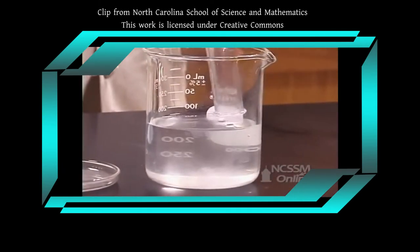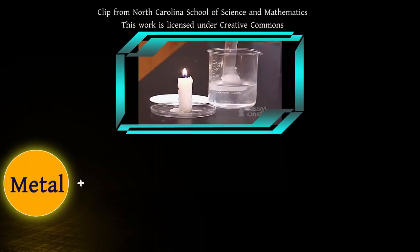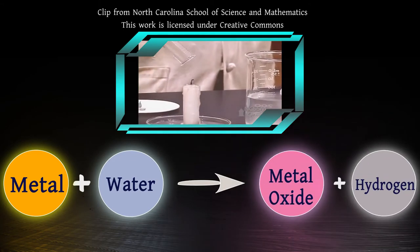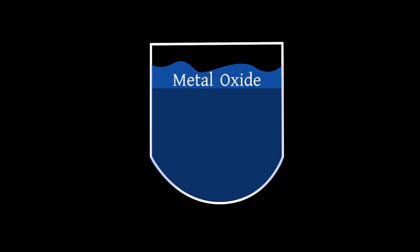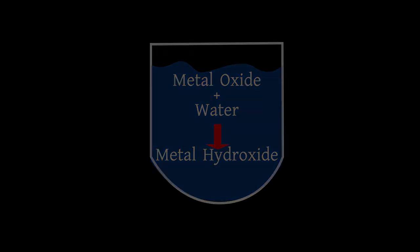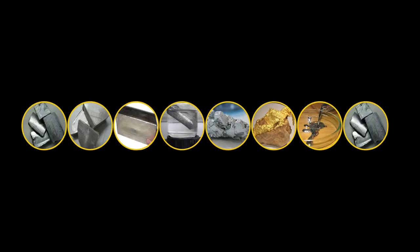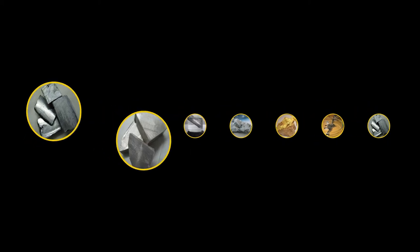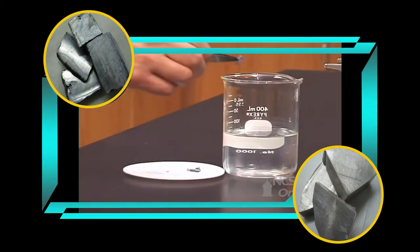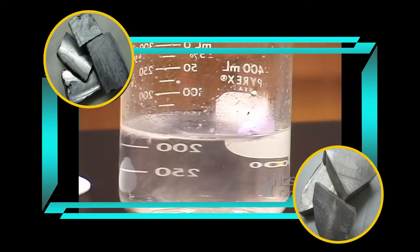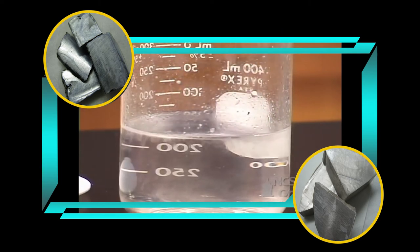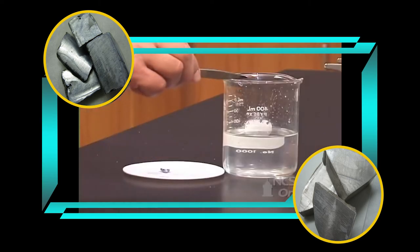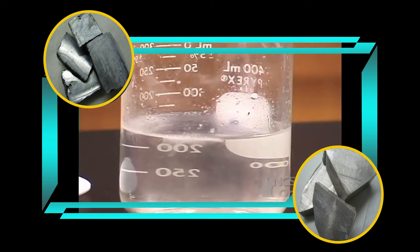Metals react with water and produce a metal oxide and hydrogen gas. Metal plus water gives metal oxide plus hydrogen. Soluble metal oxide dissolves in water to form metal hydroxides, but all metals don't react with water. Metals like sodium and potassium react vigorously with cold water. The reaction is so exothermic that the evolved hydrogen catches fire immediately.